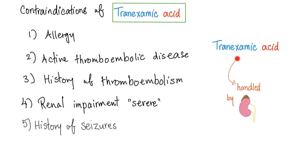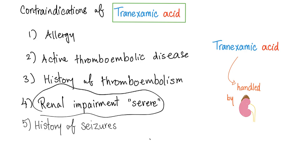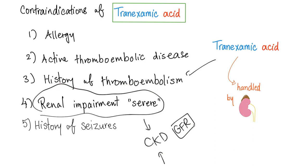Since tranexamic acid is handled by the kidney, it is contraindicated in patients with severe renal impairment. Other contraindications include allergy, active thromboembolic disease — because these drugs will lead to clots — history of thromboembolism for the same reason, and history of seizures.